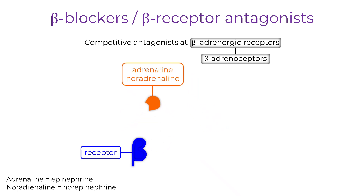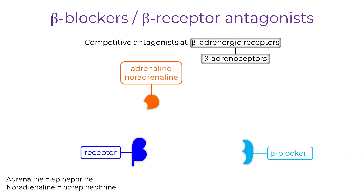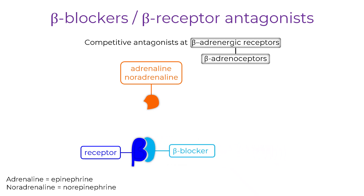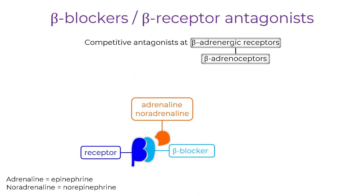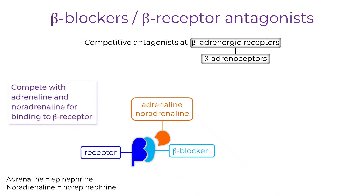When a beta blocker is present, it competes for the same binding site. Once it binds, it does not activate the receptor. Instead, it blocks the site, preventing agonist molecules from binding and triggering a response. This is how beta blockers competitively inhibit adrenaline and noradrenaline at beta receptors, which results in reduced stimulation of the heart by the sympathetic nervous system.